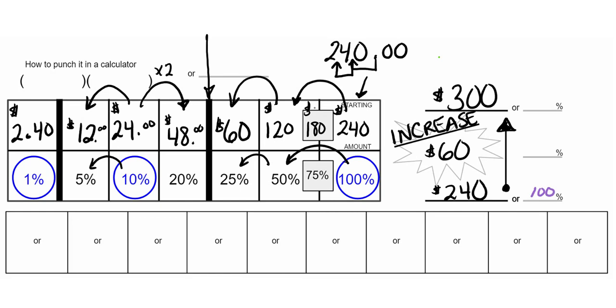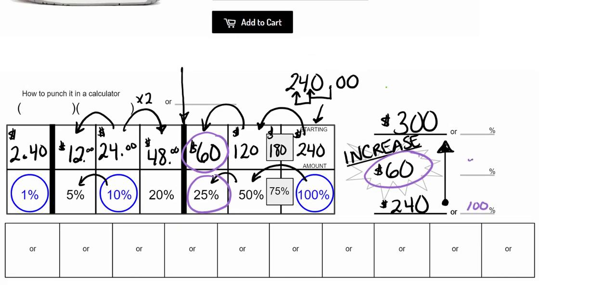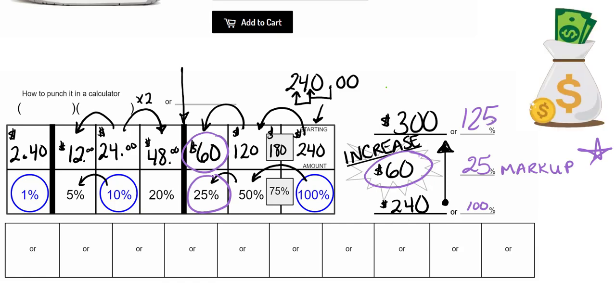I have now found my percent increase. Actually, $60 was what I was looking for and 25% is the markup. There we go. We found it. We're selling them at 125% of our original cost. We're making 25% on our money. That's really good. That's $60 profit that you can take and go invest into another pair of sneakers and do it again. So let's do it again.